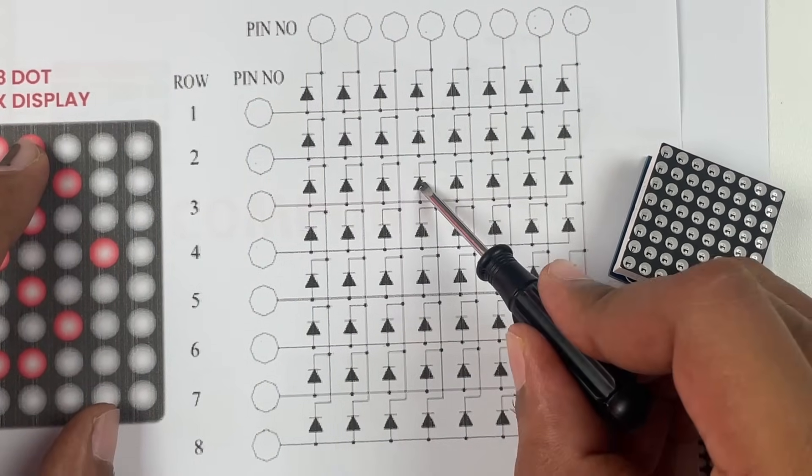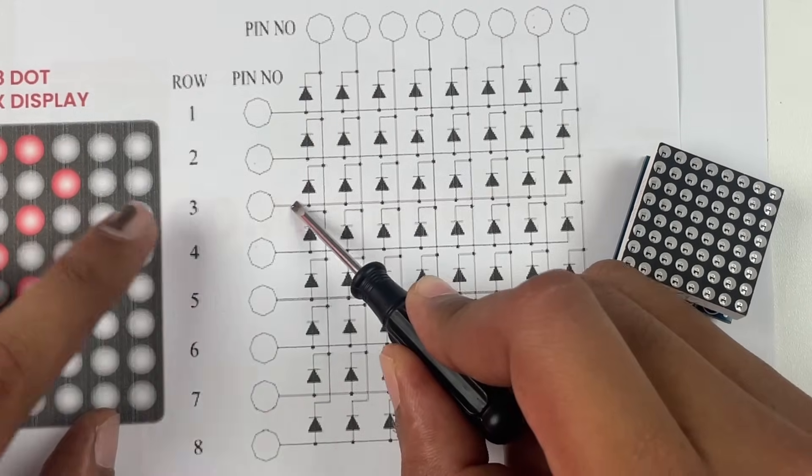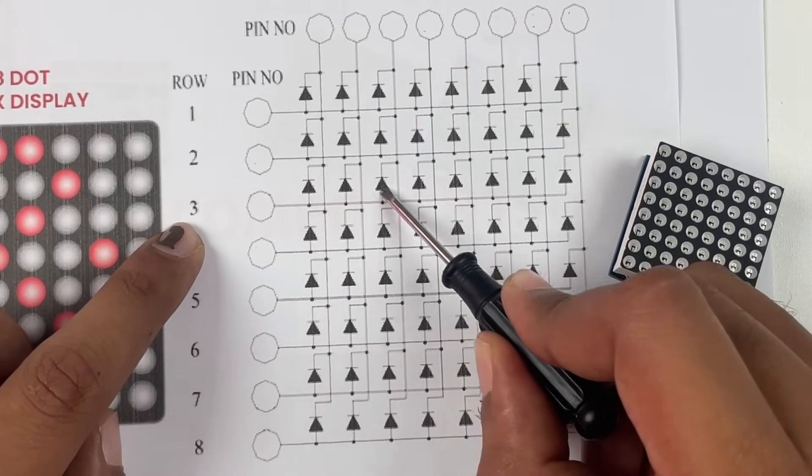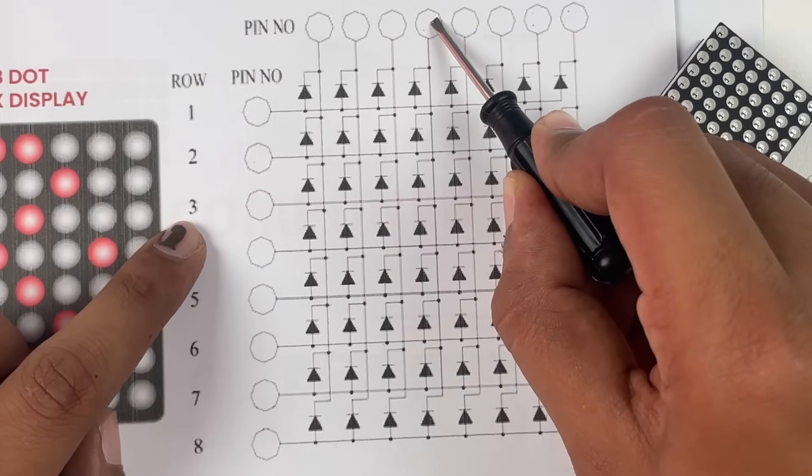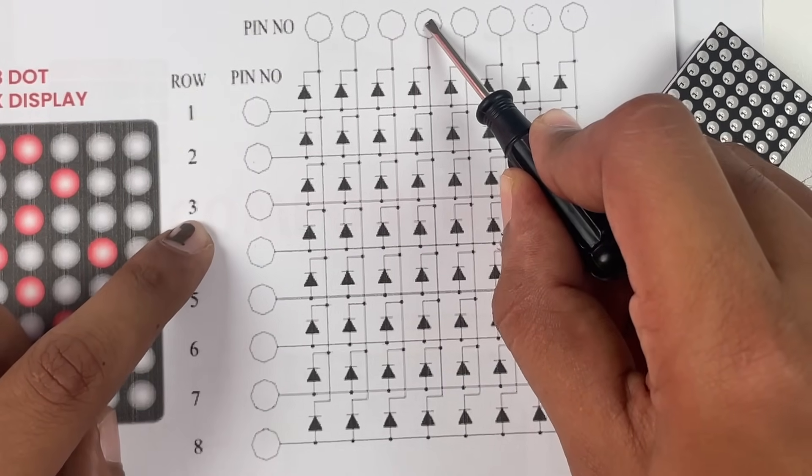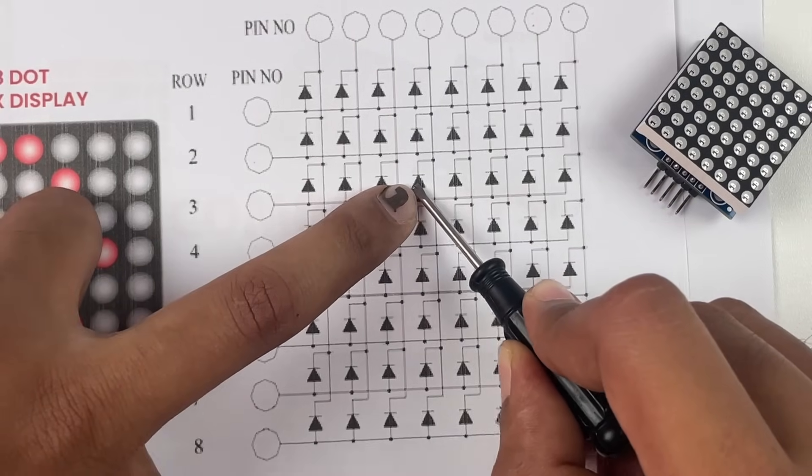Let me tell you how. Say you want to control this particular LED. You can see that the anode of this LED is connected to pin number 3 and the cathode is connected to pin number 4. So by using pin number 3 and pin number 4 we will be able to control this particular LED.